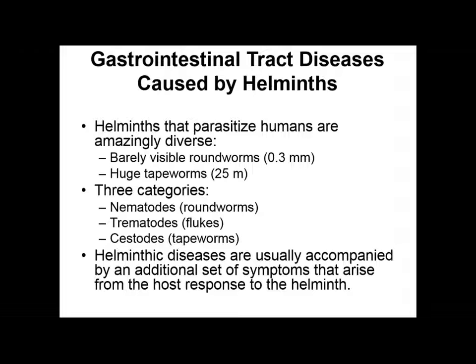There are three primary categories of helminths that we'll focus on: the nematodes, the trematodes, and the cestodes — the roundworms, the flukes, and the tapeworms. All these helminthic diseases are going to be accompanied by an additional set of symptoms that arise as a complication from the host response to that worm being within our bodies.